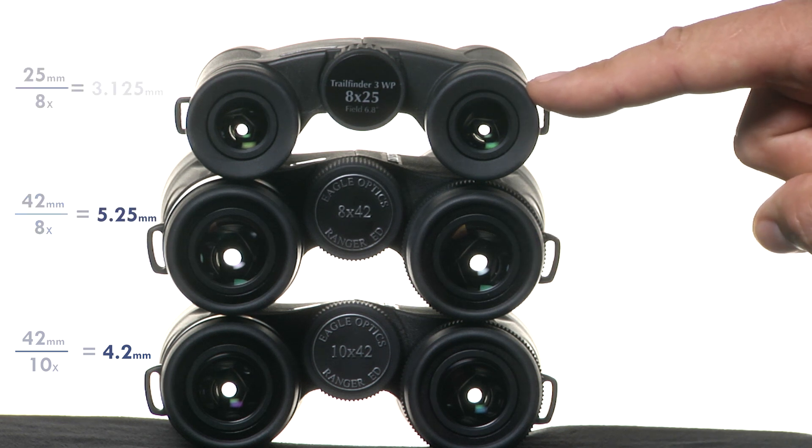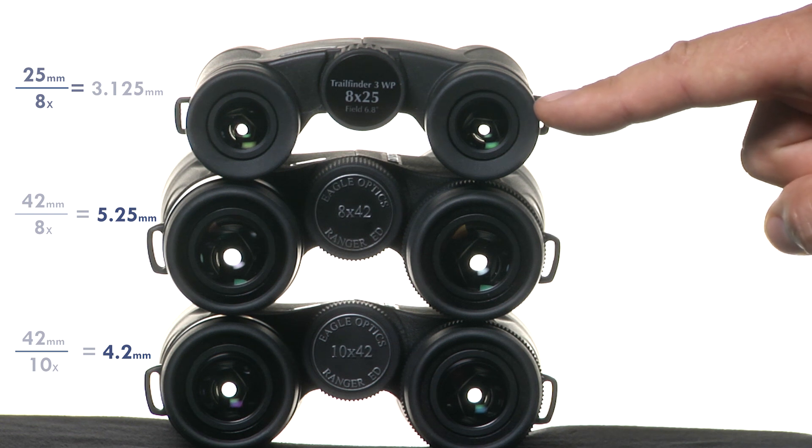If we stick with that eight power but decrease the objective lens size to 25, you can see how that exit pupil shrinks down. Here it's about three millimeters.